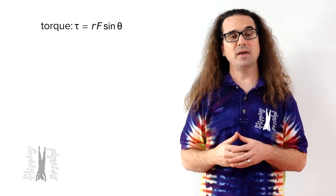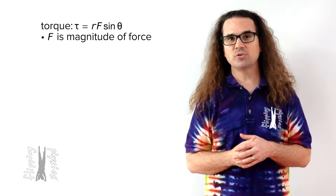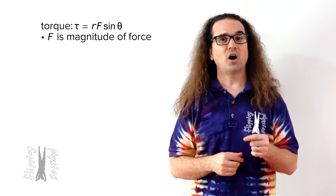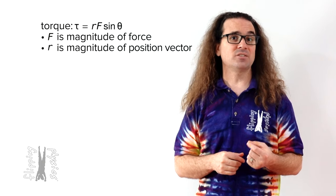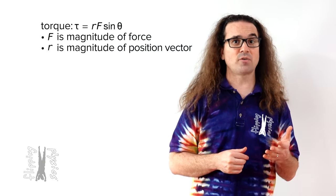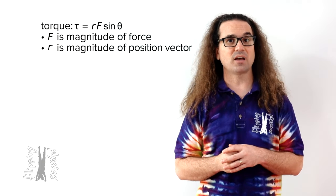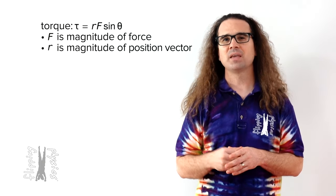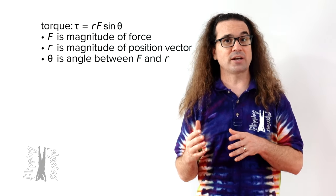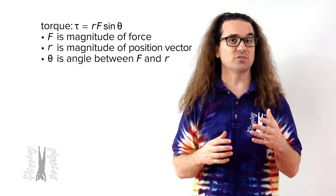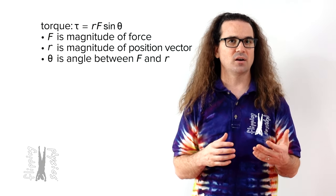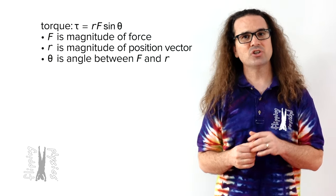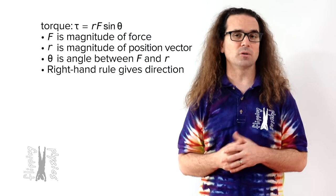Good morning. We have already defined the magnitude of torque as equal to rF sin theta, where F is the magnitude of the force causing the torque, r is the magnitude of the position vector from the axis of rotation to where the force acts on the object, and theta is the angle between the direction of the force and the direction of the position vector r. We can find the direction of the torque using the right-hand rule.